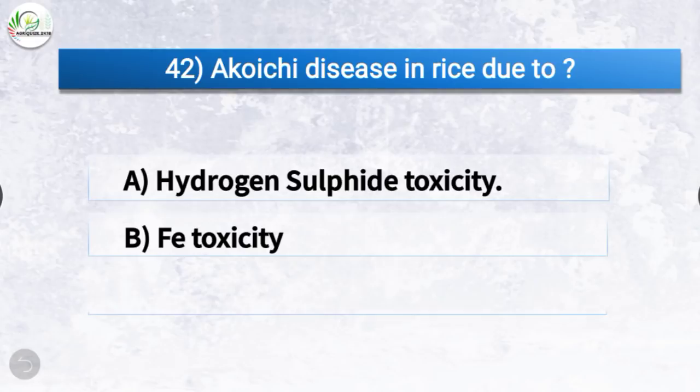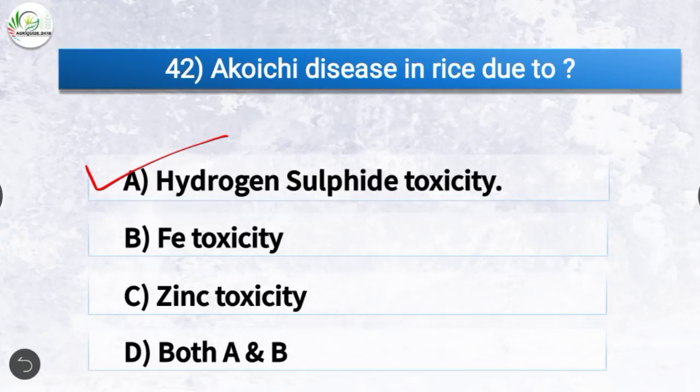Question number 42: Akiochi disease in rice is caused due to? The correct answer is option A, hydrogen sulfide toxicity.